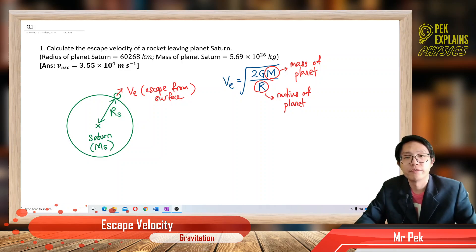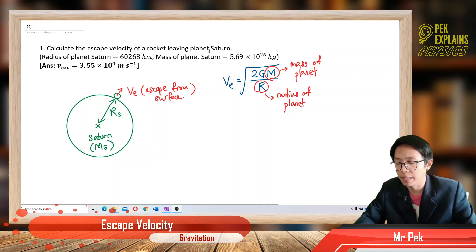Hi, now we are in the first question in escape velocity. So calculate the escape velocity of a rocket leaving planet Saturn.